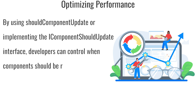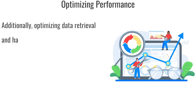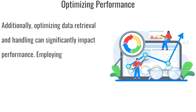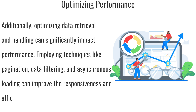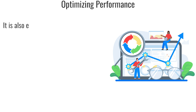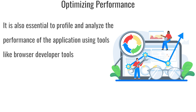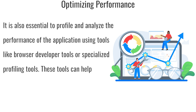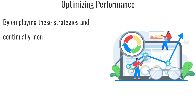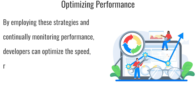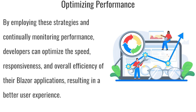By using ShouldComponentUpdate or implementing the IComponentShouldUpdate interface, developers can control when components should be re-rendered, avoiding unnecessary rendering and improving performance. Additionally, optimizing data retrieval and handling can significantly impact performance — techniques like pagination, data filtering, and asynchronous loading can improve the responsiveness and efficiency of data operations. It is also essential to profile and analyze the performance of the application using tools like browser developer tools or specialized profiling tools to identify bottlenecks and areas for improvement.